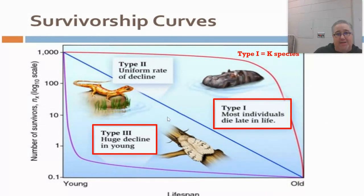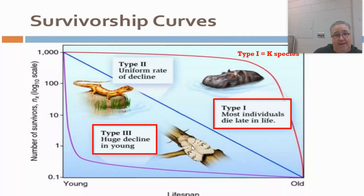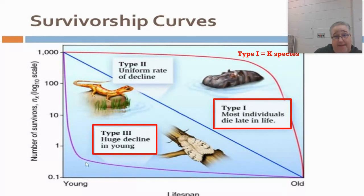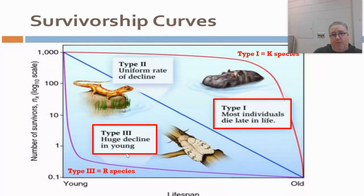A Type 3 survivorship curve is exactly the opposite. A moth would be a good example. If there were 1,000 baby moths born today, a lot of them would die off very early in life — they might get eaten by predators. Only a few might make it into older age, and those would be the ones that reproduce. Type 3 organisms are your R-selected species.